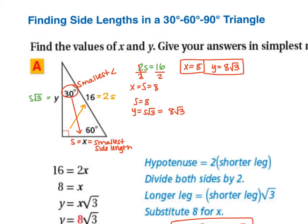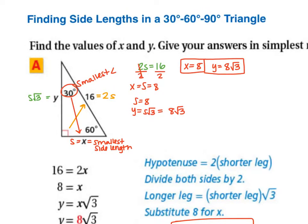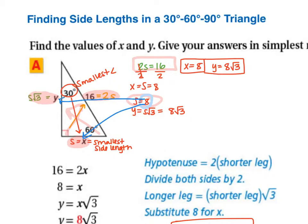In this 30-60-90 example, opposite the 30° is S, opposite the 60° is S√3, and opposite the 90° is 2S. The given side is the 2S (hypotenuse), so 2S = 16, divide by 2, and S = 8. Therefore X = 8 and Y = 8√3.